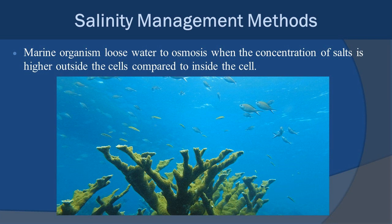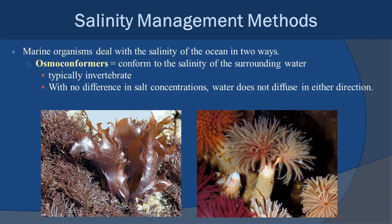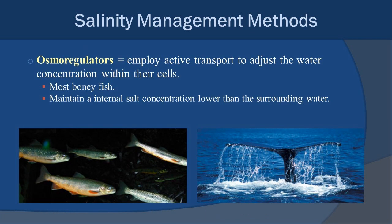In general, marine organisms will lose water through osmosis when salt concentration is higher outside the cell than inside — basically the cells are trying to dilute the ocean, which doesn't work well. One option is to be an osmoconformer: the organism makes the salinity inside and outside the cell about the same so they don't lose water — the cells are isotonic. Many invertebrates and algae are osmoconformers.